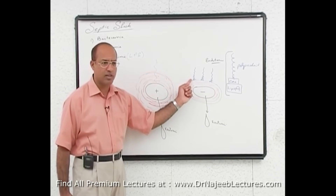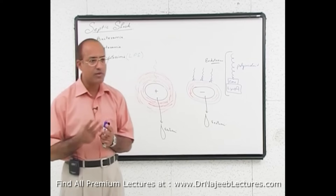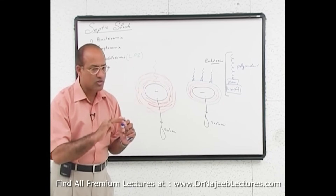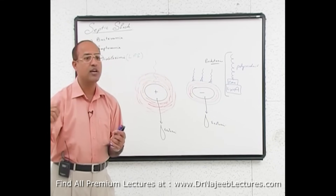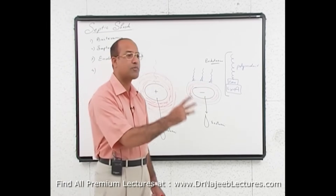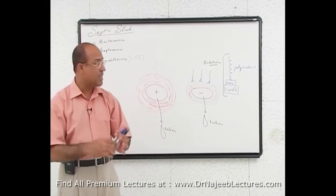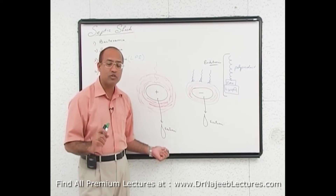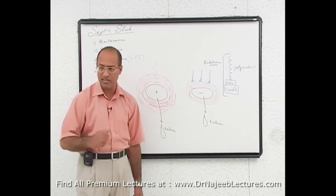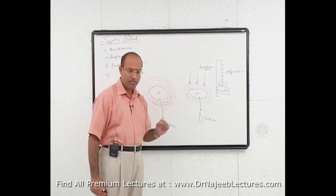All gram-negative bacteria produce the same type of endotoxins as far as Lipid A is concerned, because Lipid A is the same in all gram-negative bacteria — and it is Lipid A which is the more dangerous component producing disease. If endotoxins from three different bacteria are injected into three different patients, all patients will develop similar problems. But if exotoxins from three different bacteria are given, patients will get different diseases. Endotoxins act generally; exotoxins act specifically — targeting the nervous system, heart, or kidney depending on the type.